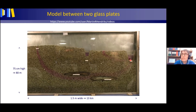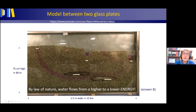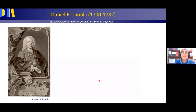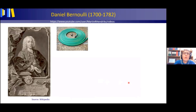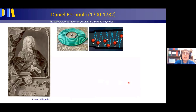By law of nature, water flows from a higher to a lower energy — answer (b). Daniel Bernoulli was a Swiss mathematician and physicist, born in the Dutch city of Groningen. To understand the physics behind groundwater flow, consider Bernoulli's principle using the example of water flowing through a garden hose. Water molecules collide with the inside of the hose building up static pressure. When water moves slowly, there are more collisions and higher pressure; when water moves fast, fewer collisions and lower pressure.